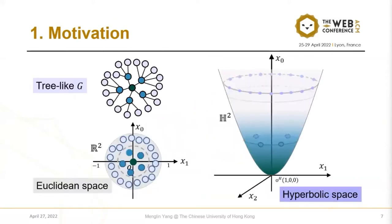Embedding the tree-like items into Euclidean space is too constrained to separate the items well, since Euclidean space expands polynomially. Hyperbolic space, however, grows exponentially, which can fit the tree-like structure very well. This is the motivation for using hyperbolic geometry for collaborative filtering.